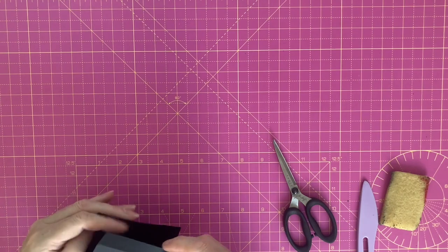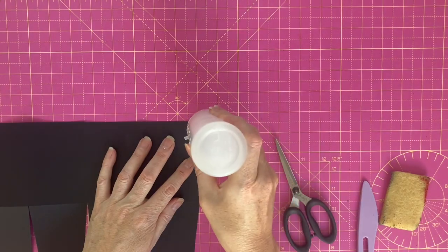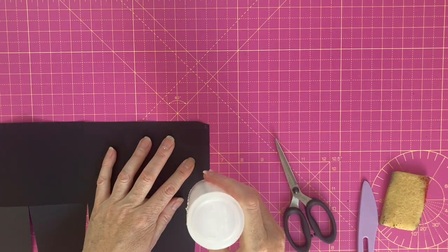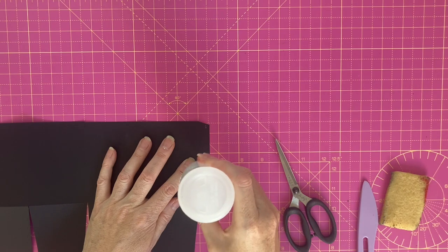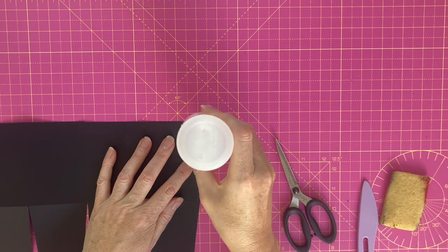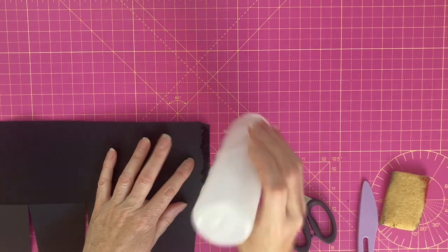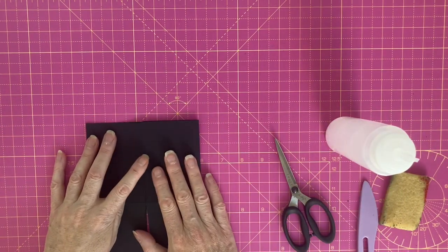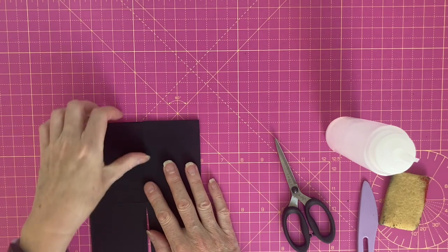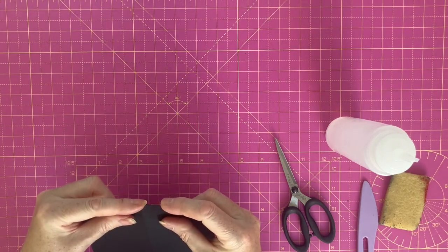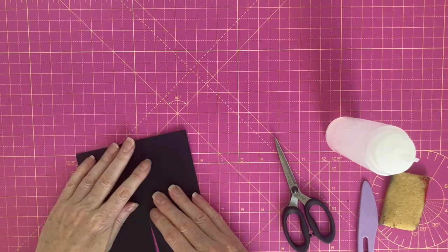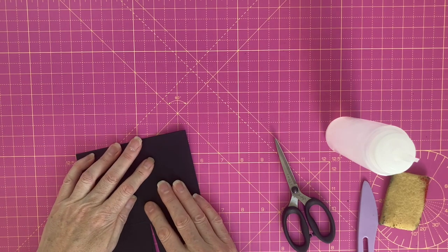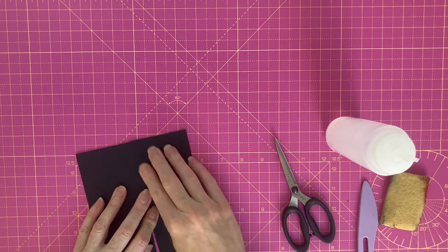I'm now going to join up my box, again making sure that my score lines at the bottom are in line.